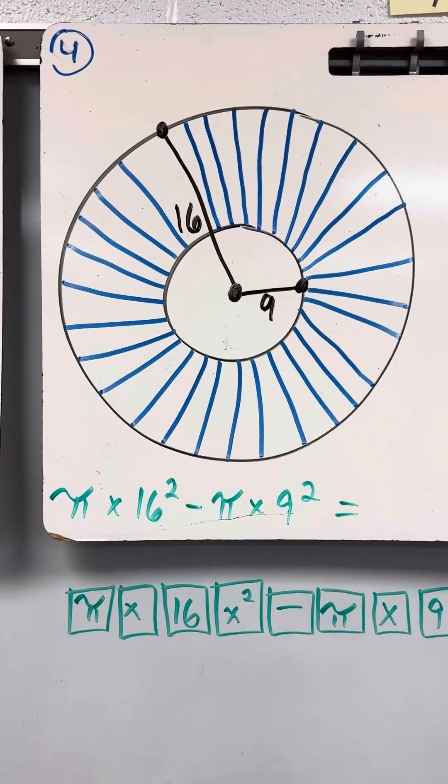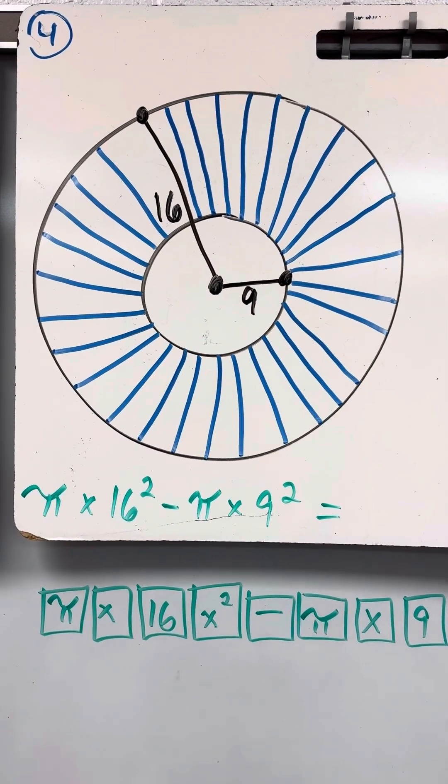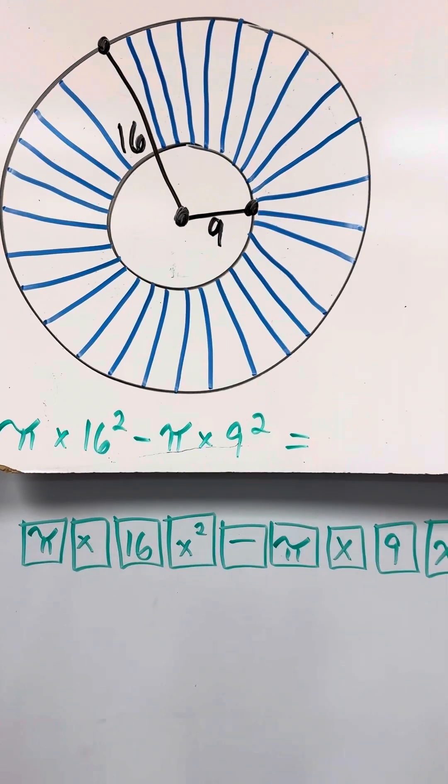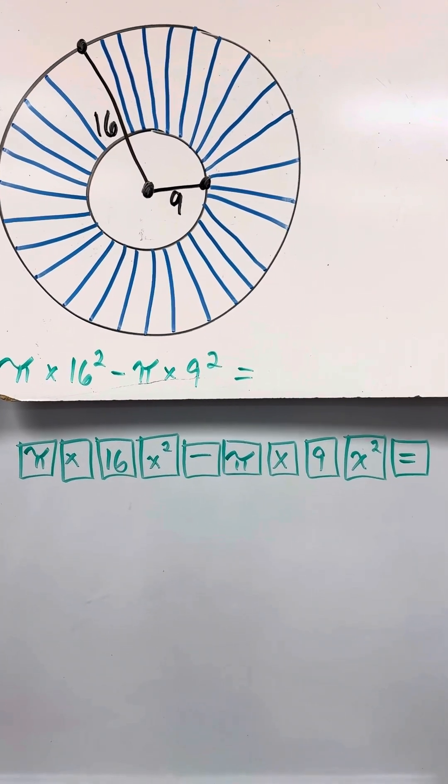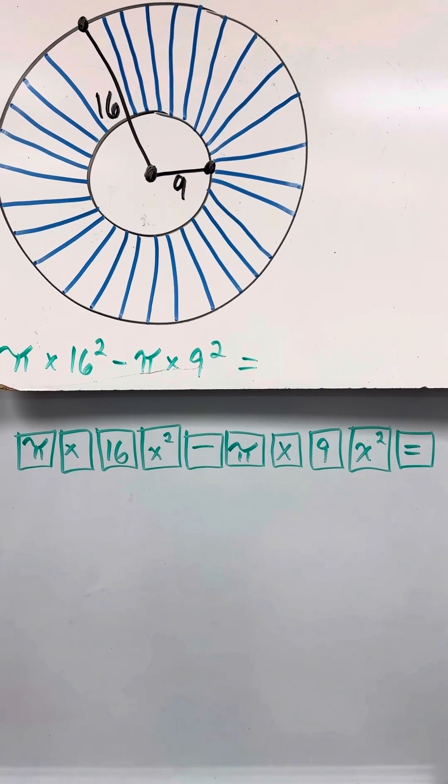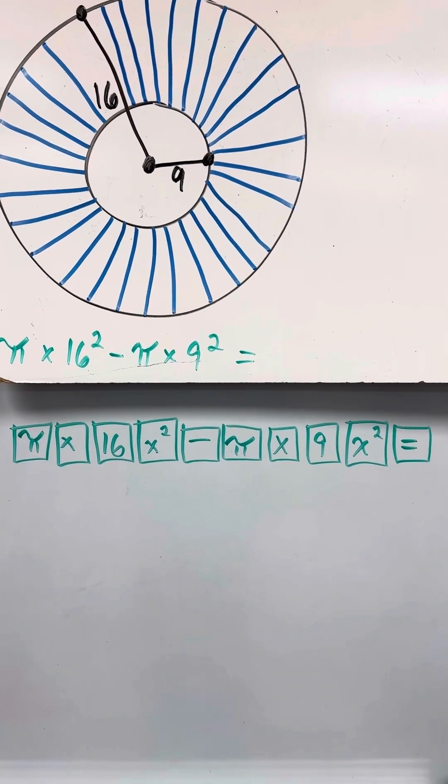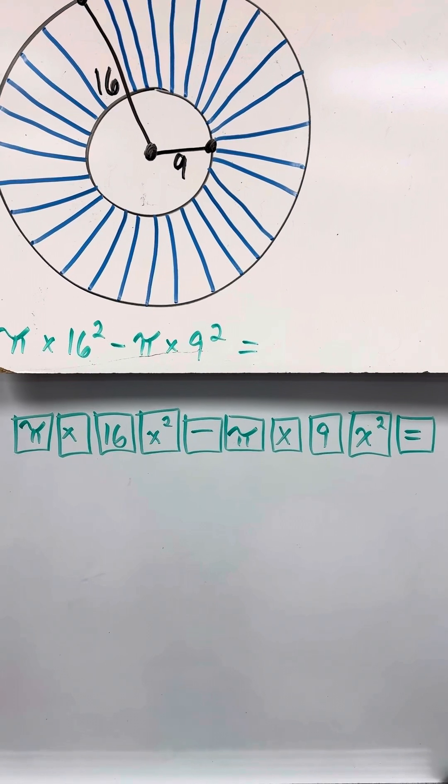Over here, we're going to do pi times 16 squared minus pi times 9 squared. Try it. Pi times 16 x squared key minus pi times 9 x squared key equals.